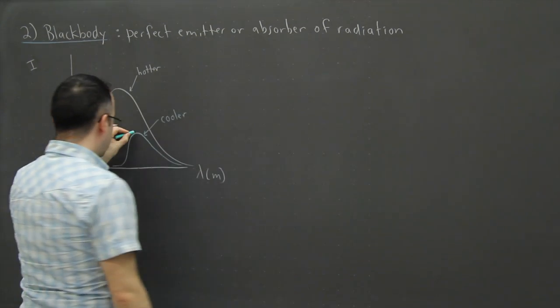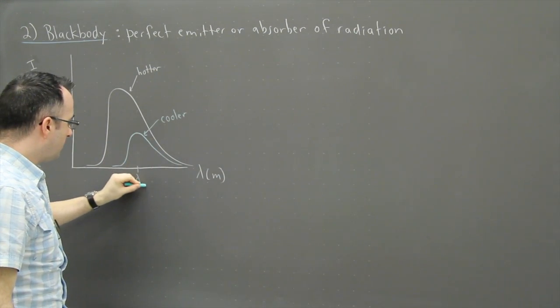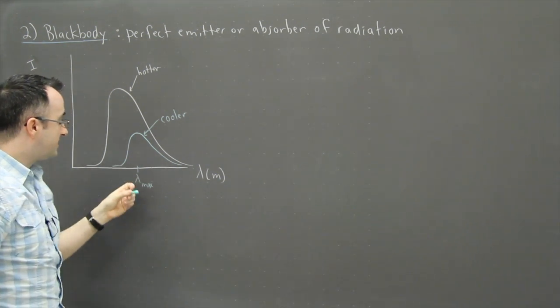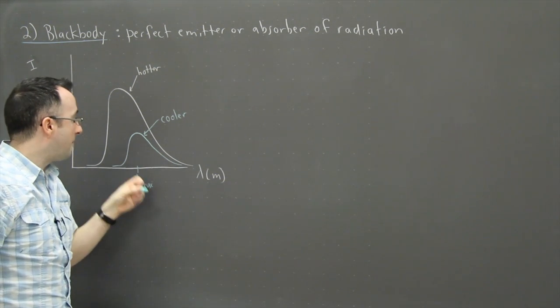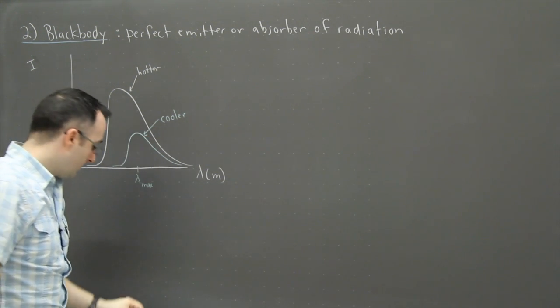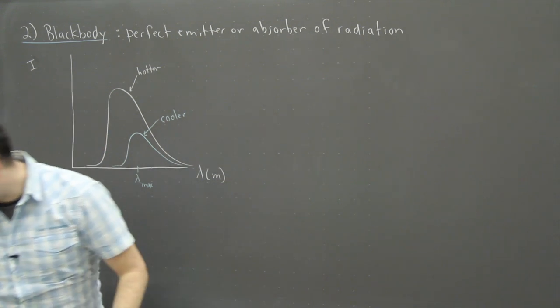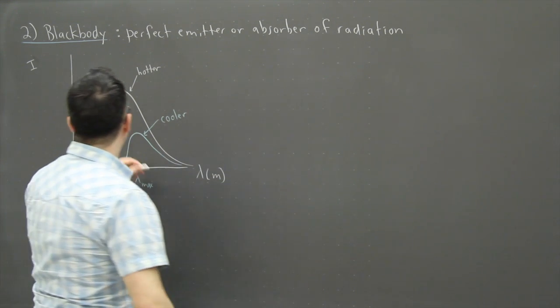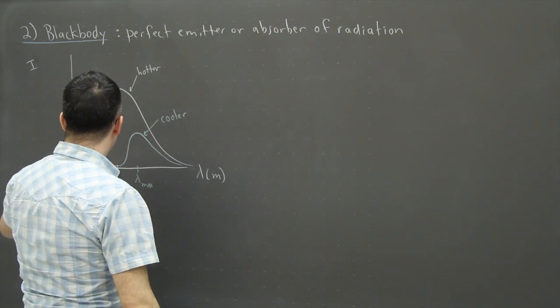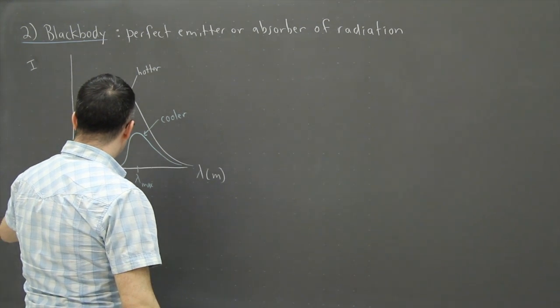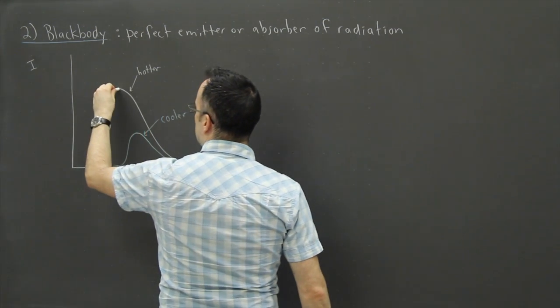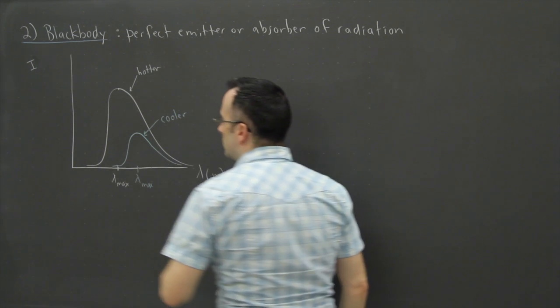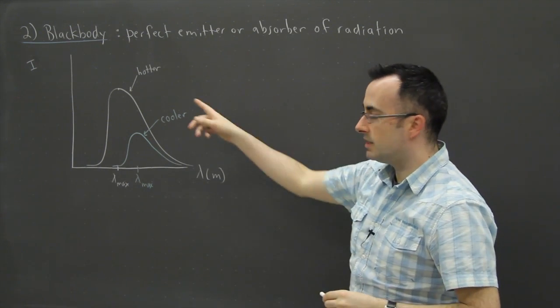So in this case, this value right here, we could say that's at lambda max. In other words, it's the wavelength that gives us a maximum intensity. And in the same way, we have another one right here, this one was also a lambda max but that one was associated with this peak right here.